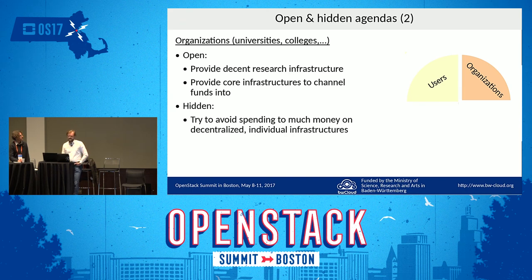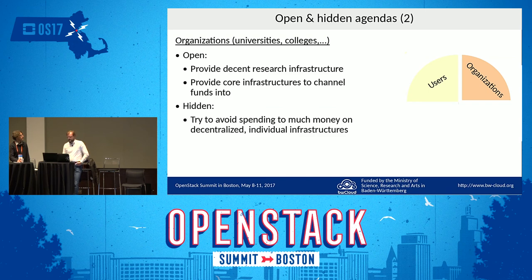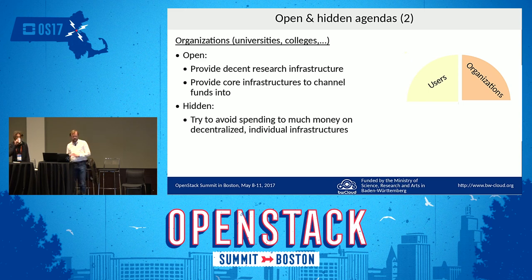The next stakeholder group is the universities and colleges. They want to provide decent modern research infrastructure and offer resources to students and scientists to increase their attractiveness and enrollment. But they also don't want to spend money on various individual infrastructures. They are curious about cooperation — on one hand they know building complex infrastructures requires cooperation, but on the other hand they closely watch their own users and ask: what's in the deal for my people, and how can we maximize that?